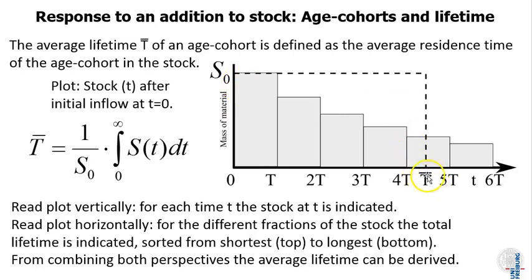So with this triple argument, first taking the average lifetime as the average residence time of the entire stock, so S0 times T-bar, then saying that this one must equal all the individual lifetimes summed up and divided by the stock, and then taking the vertical perspective, we're saying that this area under the curve equals the integral over the stock over time. I arrive at this defining equation for the average lifetime where I say if I integrate the stock over time, normalize it for S0, I get the average lifetime. It's a bit complicated to explain but it's a very powerful concept that is visualized here.